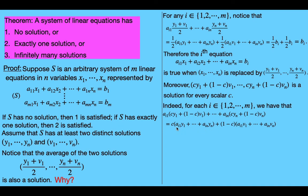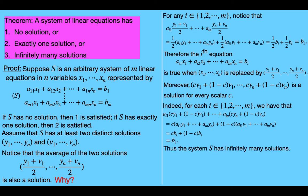And since v sub 1 to v sub n is a solution of the i-th equation, the second sum also equals b sub i. So we get c times b sub i plus (1 minus c) times b sub i. Distributing, this is just equal to b sub i. So we conclude that the system must have infinitely many solutions. That completes the proof.